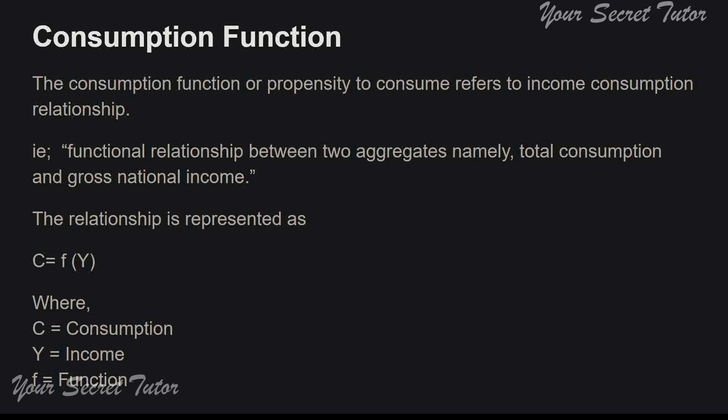When you want to represent it in a functional form, you can write it as C is equal to a function of Y — that is, consumption is a function of income.